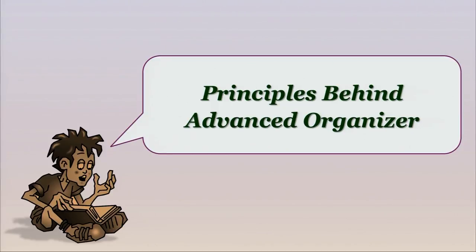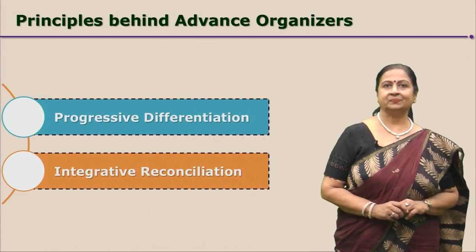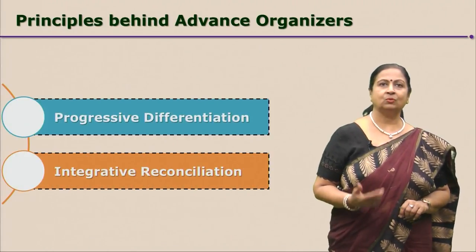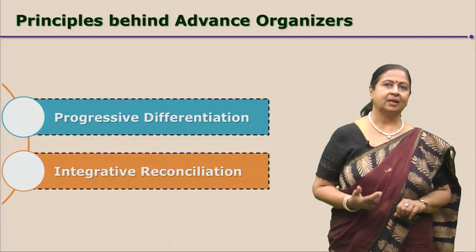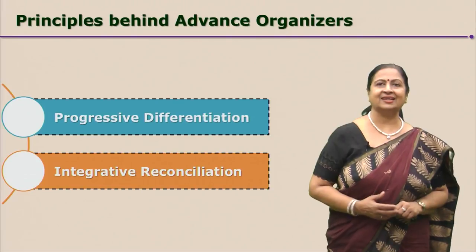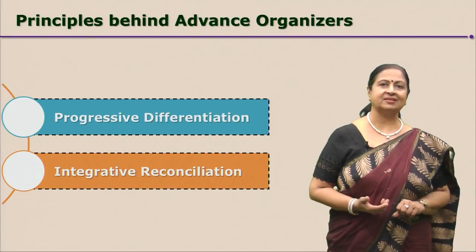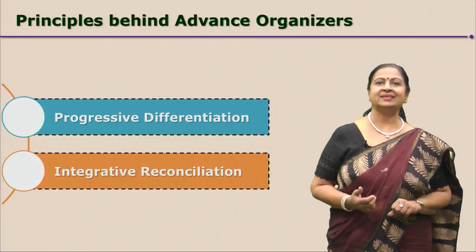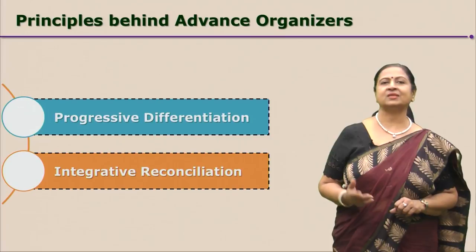The principles behind advance organizer are basically two: progressive differentiation and integrative reconciliation. These are the two main ideas or processes involved in advance organizers. In order to make knowledge organized, there are two principles involved: progressive differentiation and integrative reconciliation.